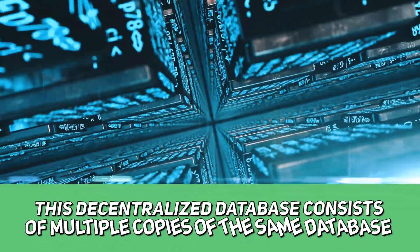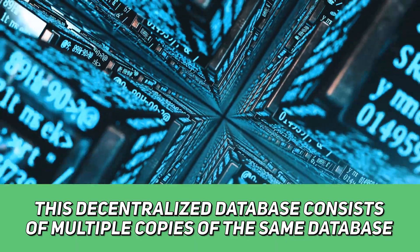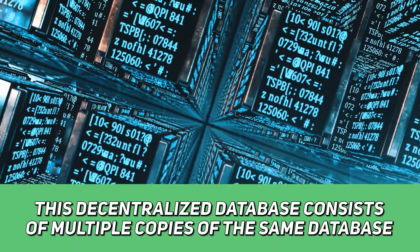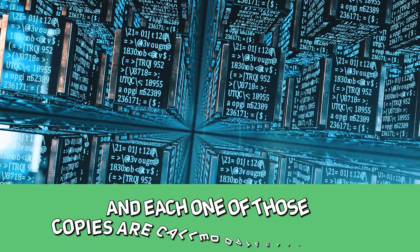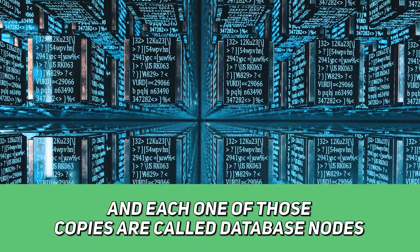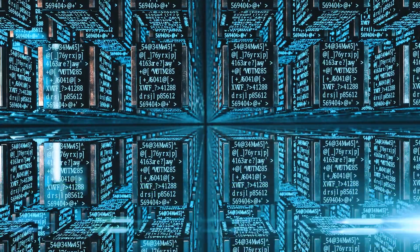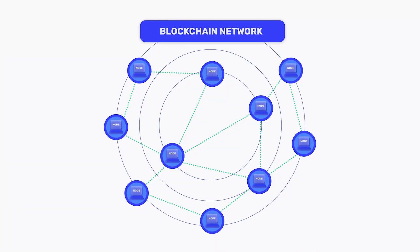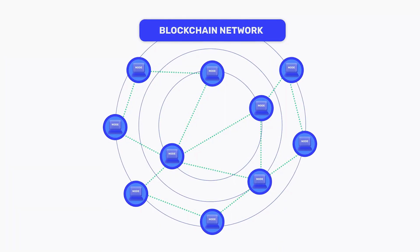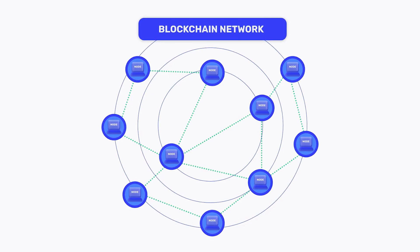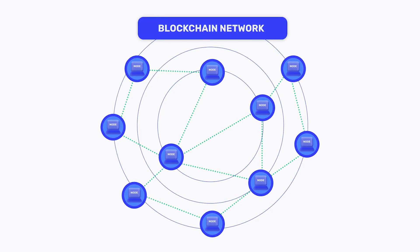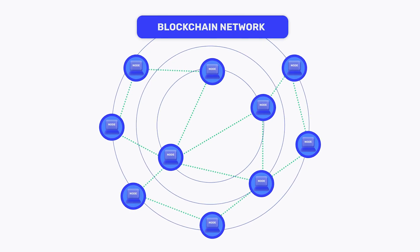This decentralized database consists of multiple copies of the same data, and each one of those copies are called database nodes. Once information is received as an input, every node immediately adds the new information. And once information is received, it cannot be changed or removed at a later date, meaning that it is permanently on the blockchain.